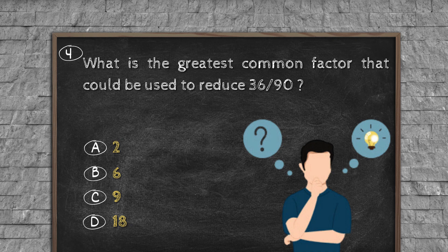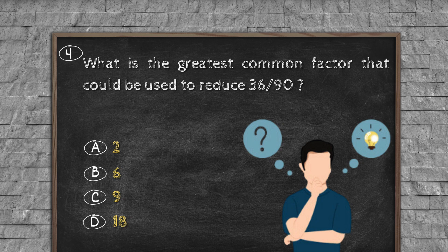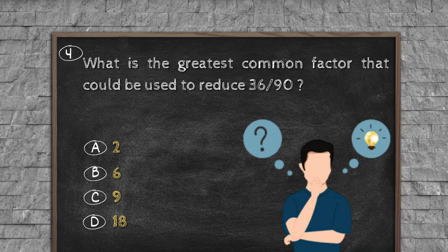Question number four: What is the greatest common factor that could be used to reduce 36/90? Option A: 2. Option B: 6. Option C: 9. Option D: 18.